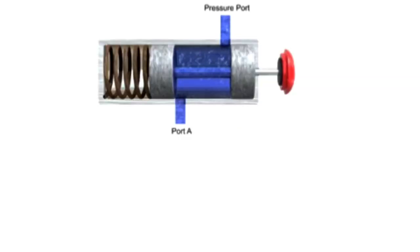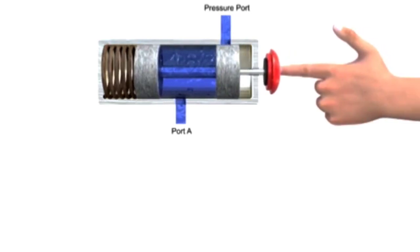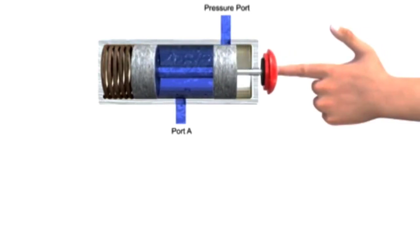This spool valve has two ports and two positions. The first position allows fluid to flow freely. The second position blocks both ports. Even though both ports aren't physically blocked, the lack of fluid entering the pressure port also prevents fluid from exiting outlet port A. Therefore, both ports are defined as blocked, making it a two-way, two-position valve.